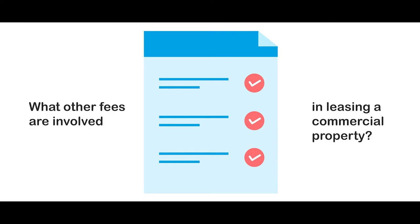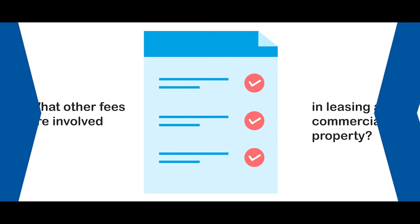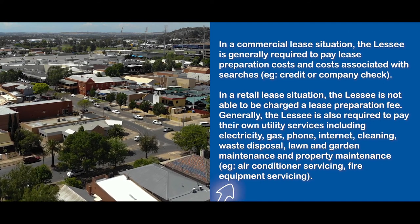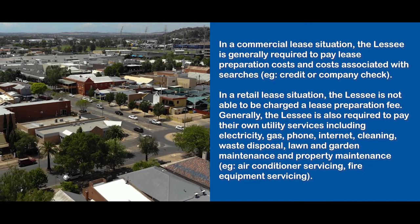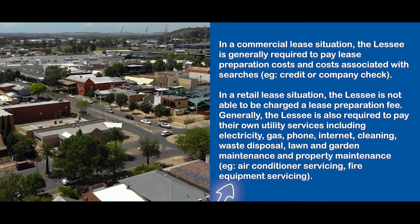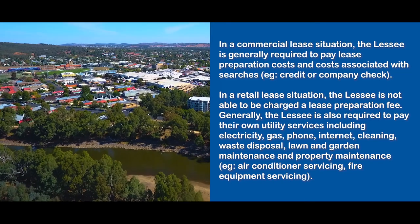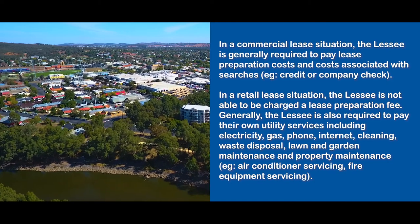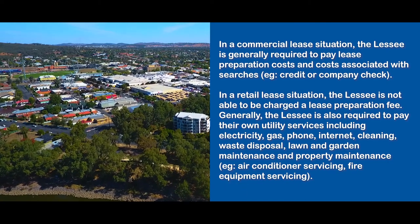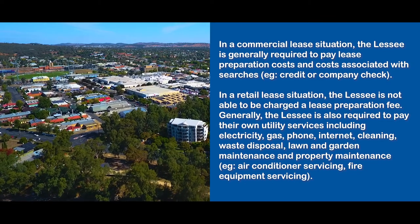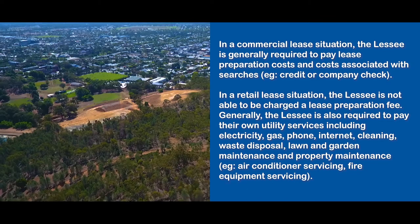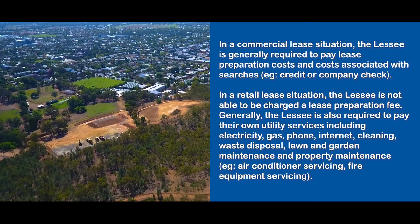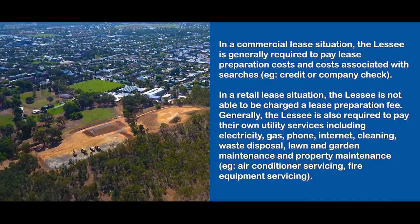What other fees are involved in leasing a commercial property? In a commercial lease situation, the lessee is generally required to pay the lease preparation costs and costs associated with searches, for example credit or company checks. In a retail lease situation, the lessee is not able to be charged a lease preparation fee. Generally the lessee is also required to pay their own utility services including electricity, gas, phone, internet, cleaning, waste disposal, lawn and garden maintenance, and property maintenance, for example air-conditioner servicing and fire equipment servicing.